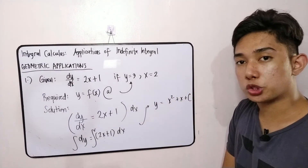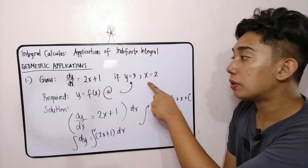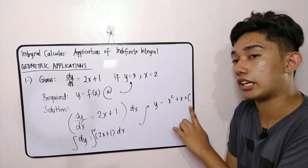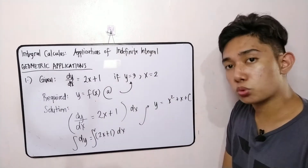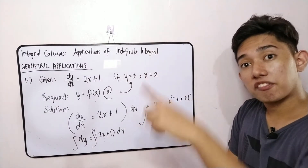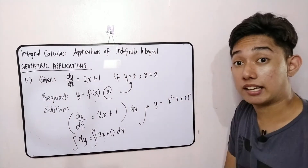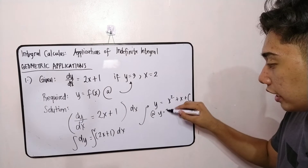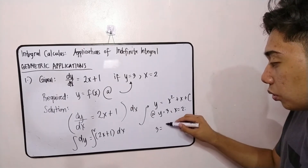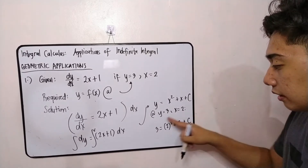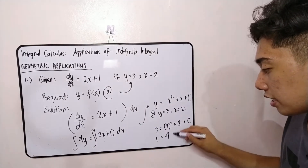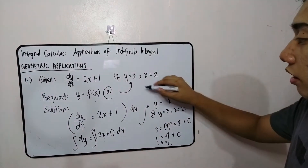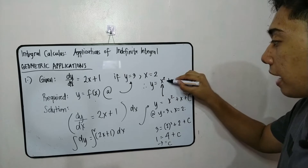To make this a particular solution, we use our initial value. The general solution has many possible solutions involving plus c — like x² + x + 1, x² + x + 2, x² + x − 1 — each with a different graph. Selecting an initial value gives us just one function. Substituting y = 3 and x = 2: 3 = (2)² + 2 + c, which gives 3 = 6 + c, so c = −3. Therefore, our final answer is y = x² + x − 3.